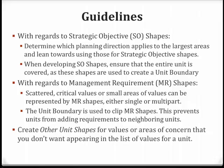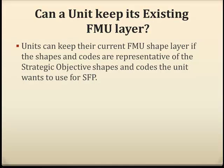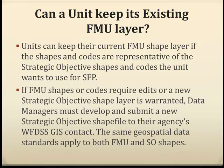Create other unit shapes for values or areas of concern that you do not want appearing in the list of values for a unit. Units can choose to keep their current FMU shape layer if the shapes and codes are representative of the strategic objective shapes and codes the unit wants to use for spatial fire planning. If FMU shapes or codes require edits or a new strategic objective shape layer is warranted, data managers must develop and submit their new strategic objective shapefile to their agency's WFDIS GIS contact. The same geospatial data standards apply to both FMU and strategic objective shapes.